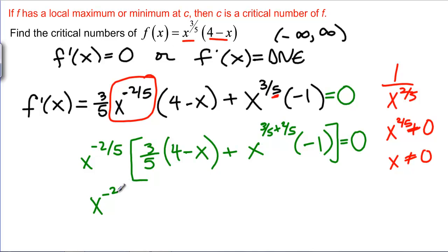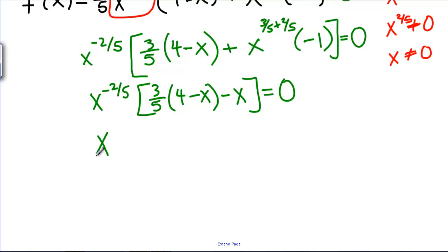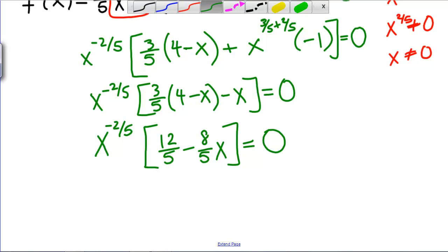This simplifies to X to the negative 2 fifths times 3 fifths 4 minus X minus X. So simplifying just a little bit more we get X to the negative 2 fifths is 12 fifths minus 3 fifths X minus another X so that would be another 5 fifths X. So minus 8 fifths X equals 0. So now a function can only equal 0 if one of its factors equals 0. So this either equals 0 or this equals 0.